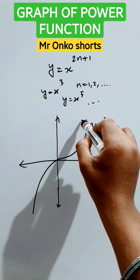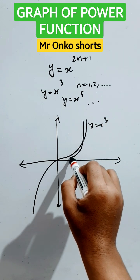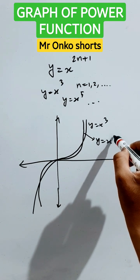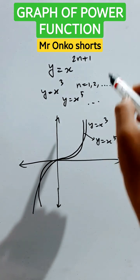In case of x to the power 5, it will be like this. This graph is y equals to x to the power 5. And for x to the power 7, it will